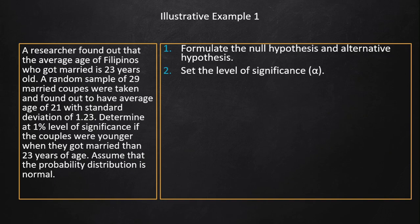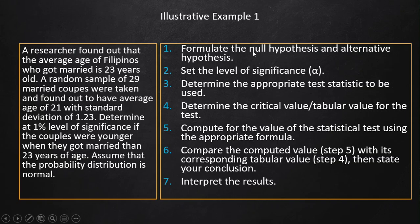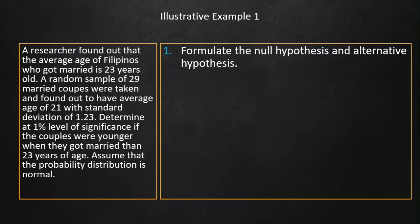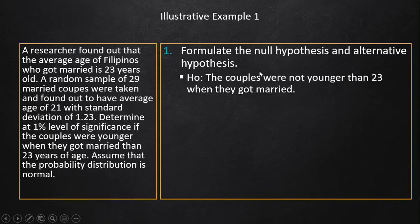We follow the seven steps. If you're not familiar with them, go back to the first video. Step one: formulate the null and alternative hypotheses. Look for the main problem — we want to determine whether these 29 married couples were younger when they got married compared to the Filipino average. The null hypothesis is: the couples were not younger when they got married, stating objectivity or neutrality.